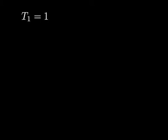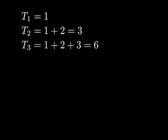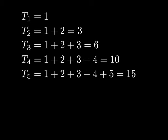Here we are going to define what are known as the triangular numbers, and we will denote the nth triangular number by t sub n. We first define t1 to be 1. Then t2 is defined to be 1 plus 2, which is 3. t3 is 1 plus 2 plus 3, which is 6. t4 is 1 plus 2 plus 3 plus 4, which is 10. t5 is 1 plus 2 plus 3 plus 4 plus 5, which is 15. And so on.